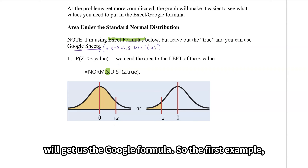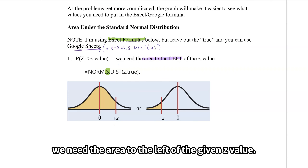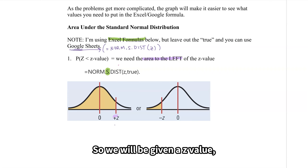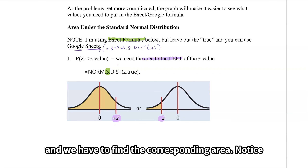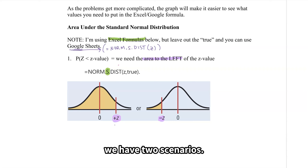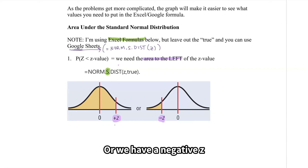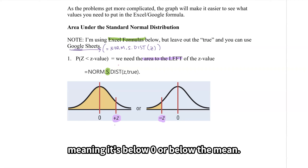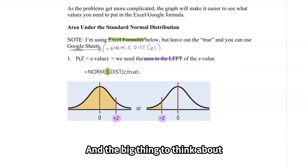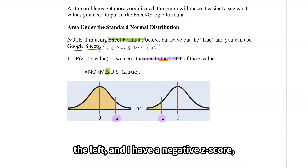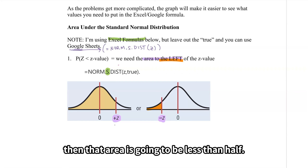In the first example, we need the area to the left of a given z value. Notice we have two scenarios: we could have a positive z, meaning it's above the mean, greater than zero, or we have a negative z, meaning it's below zero or below the mean. The key thing to think about is that if we're looking at areas to the left and we have a negative z score, that area is going to be less than half.